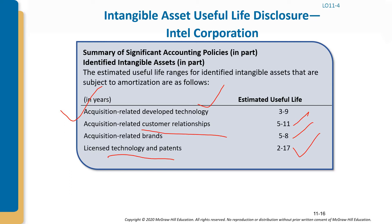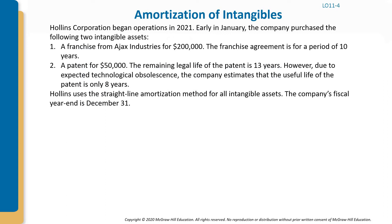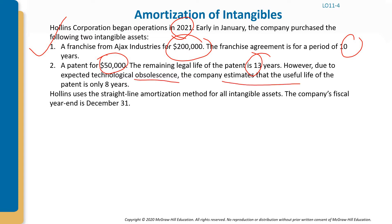For our first example, a company began operations in January 2021 and purchased two intangible assets: a franchise from Ajax Industries for $200,000 with a 10-year agreement, and a patent for $50,000 with a remaining legal life of 13 years.